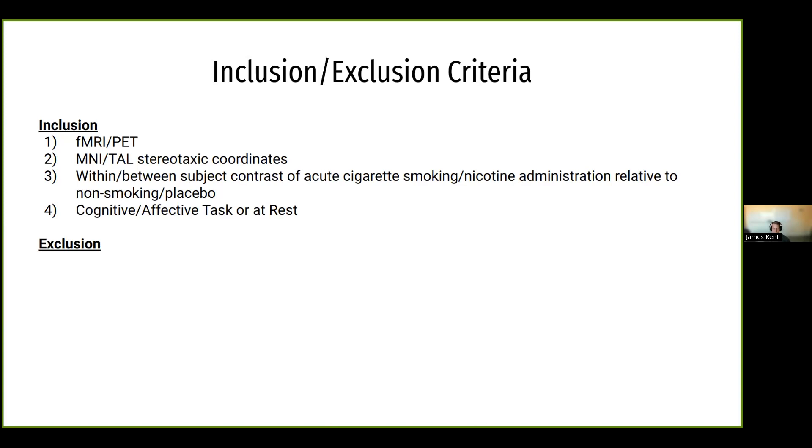Now what we'd want to exclude is if the outcome measure is functional connectivity, which is just how well the brain regions are in synchrony, brain morphology, as in what are the different shapes of different brain areas, or neurochemistry, which would be the level of neurotransmitter in different brain areas. So if those are the only outcome measures of the studies, then we don't want to include them. And also we don't want to include non-human species. It's kind of implicit with the MNI and Talairach stereotaxic coordinates that need to be reported, but I'm just making that more of an explicit exclusion criteria.